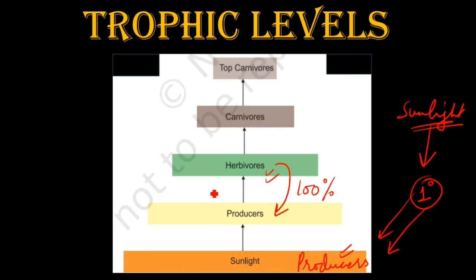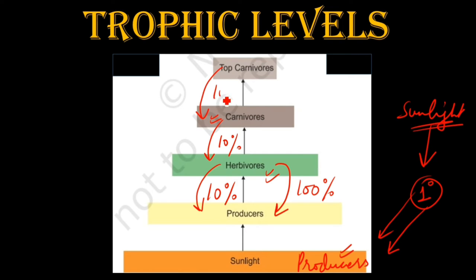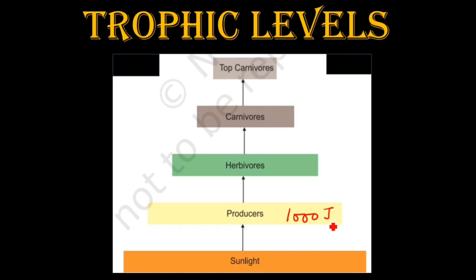That is why just only 10% of energy is consumed by the herbivores when they feed on the producers. In the same way, when these carnivores will be eating the herbivores, they will again get just only 10% of energy. And the same cycle goes on. Let's understand this with the help of one example. These producers have 1000 joules of energy. As you know, only 10% of energy will be given to the herbivores — so how much energy will this herbivore get?